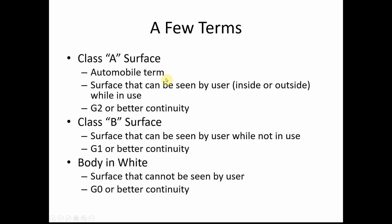Last slide — just some terms. Class A surface is an automobile term: surfaces that can be seen by the user, whether inside or outside, while the product is in use. Typically it's G2 or better, but that's based on company standards — G2 or better continuity.